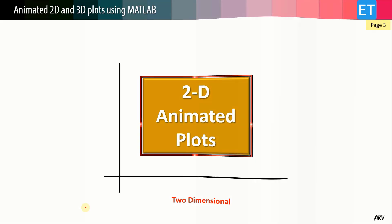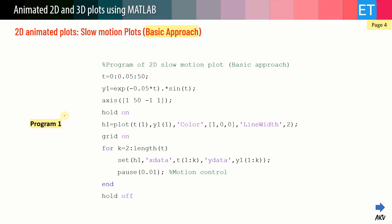Let's start with the two-dimensional animated plots. The first example plots a simple decaying sinusoidal wave for time zero to 50. This is the time declaration and the function declaration — e to the power of minus 0.05t times sine t. The axes are defined, hold on is set, and the plot object h is declared with the initial values t1, y1, using red color defined by RGB values, line width, and grid on.